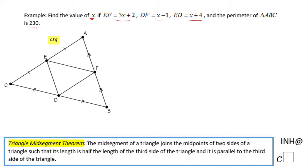We notice we are given EF, DF, and ED. These are the sides of the small triangle, and each side of this small triangle, EF for example, is the midsegment of triangle ABC.